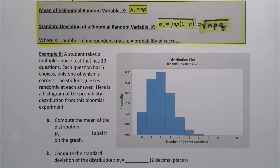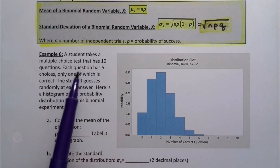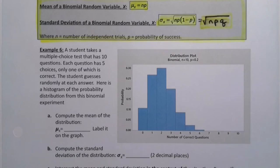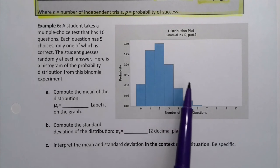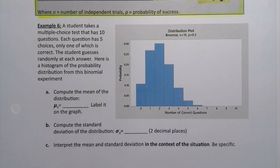So yet again, we have our poor hapless student that took their multiple choice test that had 10 questions, each of which has five choices, only one of which is correct. The student guessed randomly at each answer. Here's a histogram of the probability distribution from this binomial experiment.